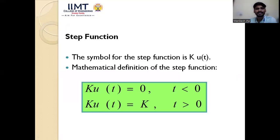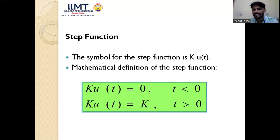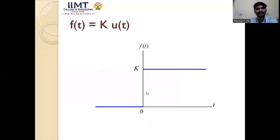The unit step function is defined as k·u(t): when t ≥ 0, u(t) = 1, so k·u(t) = k; when t < 0, u(t) = 0, so k·u(t) = 0. Graphically, for negative time the value is 0, and from t = 0 to infinity the value is k, with a jump discontinuity at t = 0.